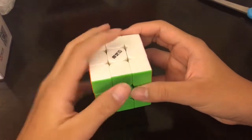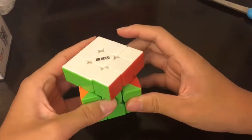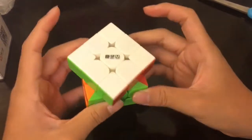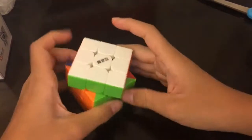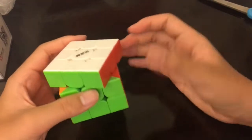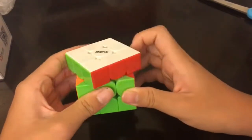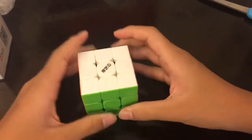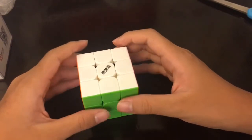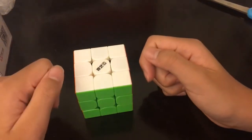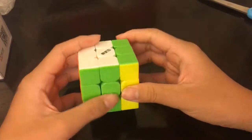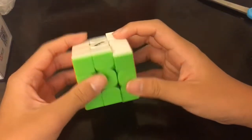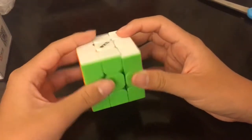As usual for most budget cubes, this cube's corner cutting is horrendous. It's even worse than RS3M 2020, it's like just 20 degrees. Reverse, well, at least the RS3M 2020 can do reverse. It can do a little bit but not too good. It's even tighter. How can you even solve a cube this tight?